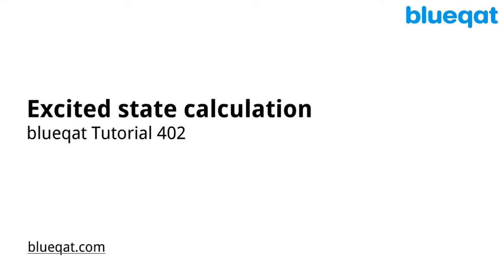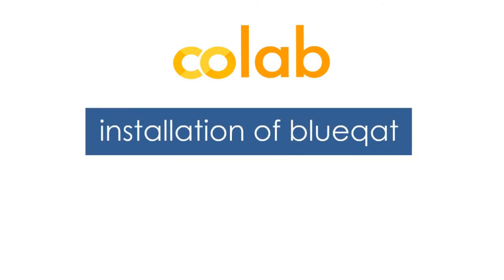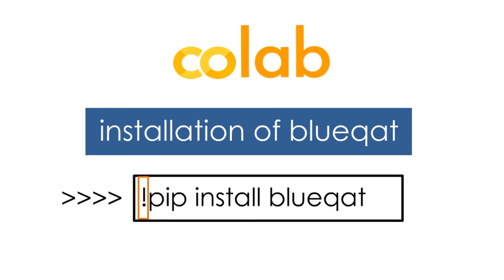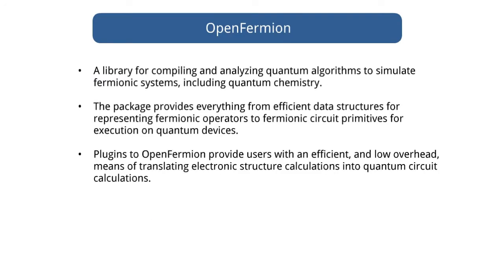In this tutorial video we will be learning about excited state calculation. We will be doing the coding on Google Colab like we did in the previous video. We will be starting with the installation of BlueQat. Type the code exclamation mark pip install bluegat in order to install BlueQat.